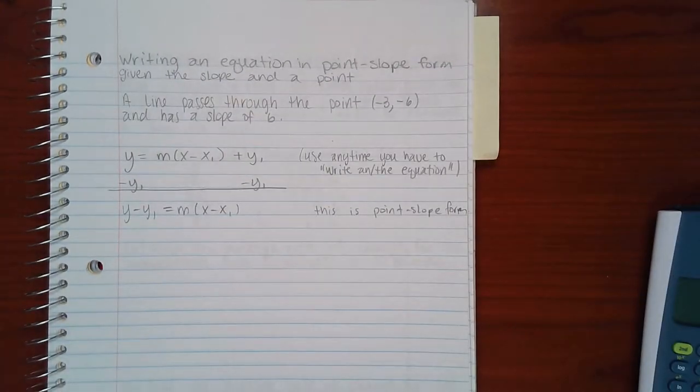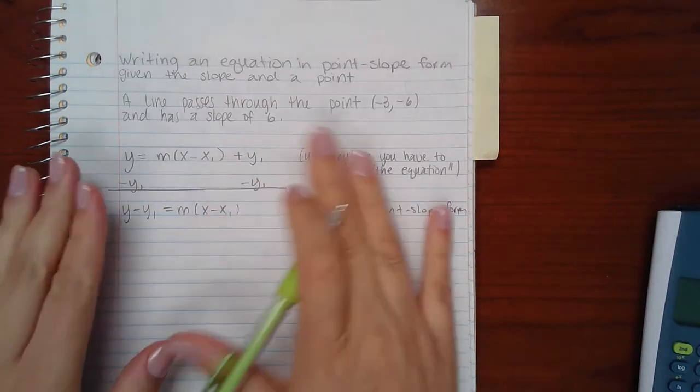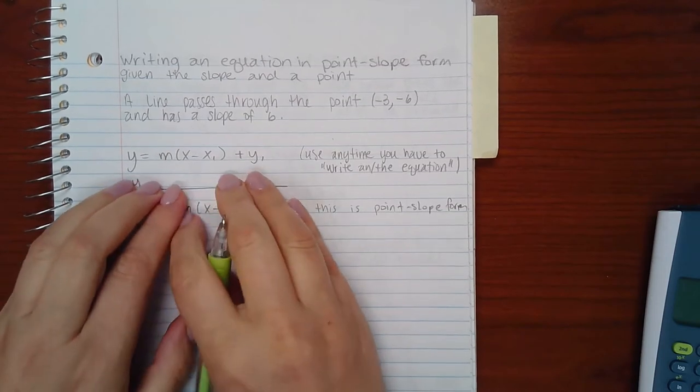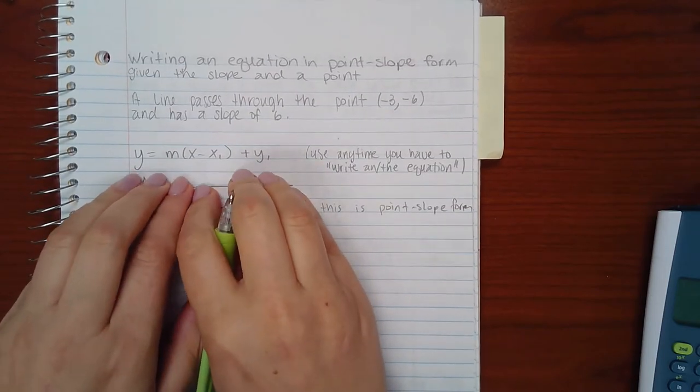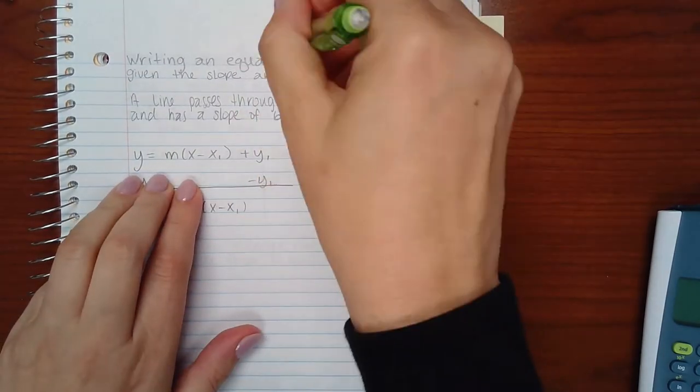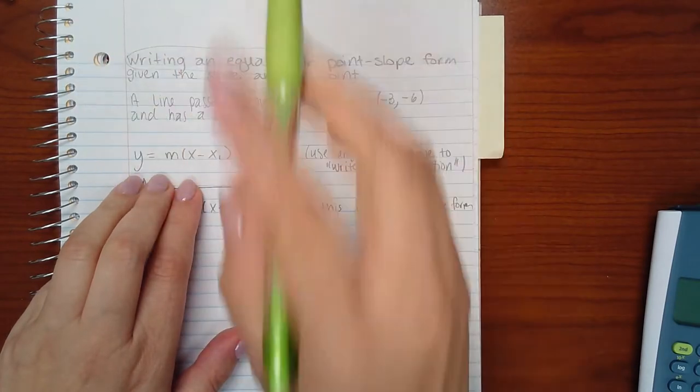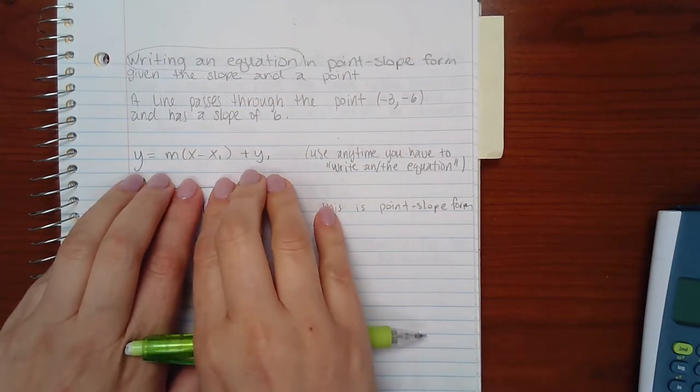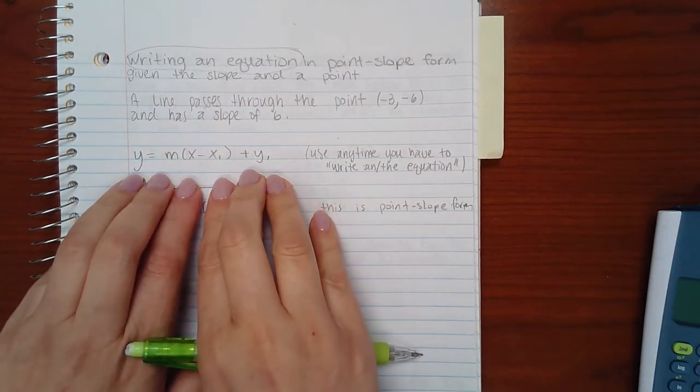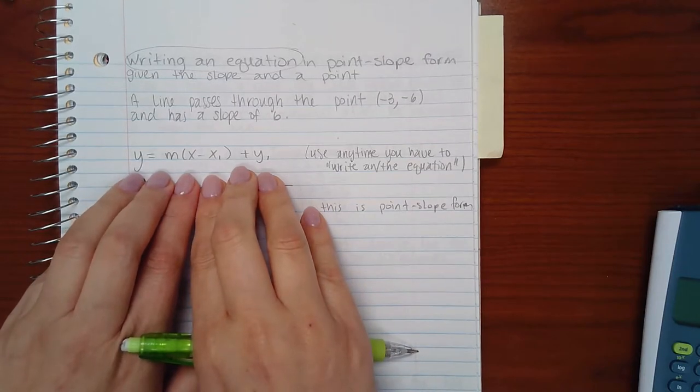This video is about writing an equation in point-slope form given the slope and a point. Normally we use this equation when we write an equation. So anytime you see these words write an equation or writing an equation, give the equation, things like that, this is the formula that you want to use.